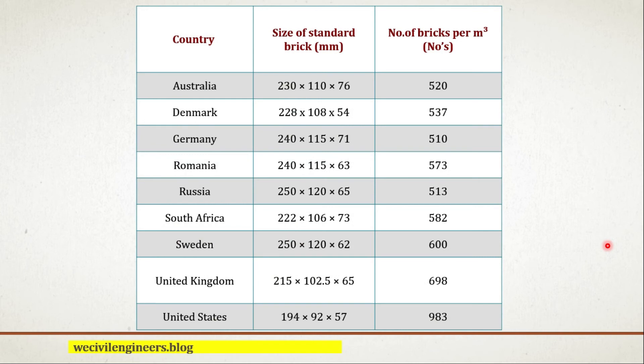Every country has their own standard size of brick. India uses 190 mm by 90 mm by 90 mm, Australia uses 230 mm by 110 mm by 76 mm, the United States uses 194 mm by 92 mm by 57 mm, and the United Kingdom uses 215 mm by 102 mm by 65 mm. I have calculated the number of bricks required per cubic meter for a few countries.